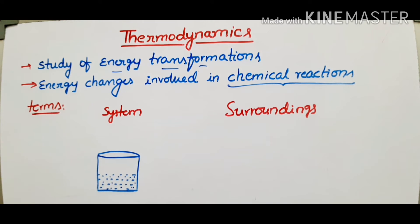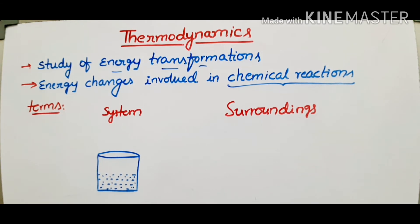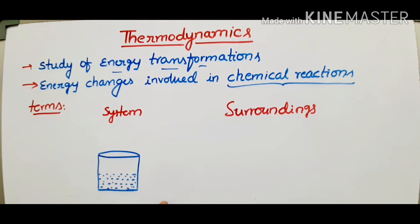Now we have to know some thermodynamic terms. First, we have to understand 'system', and next 'surroundings'. The part in which the observations are made is called the system. For example, in a beaker, we have a mixture of A and B. The chemical reaction involved with the material inside the beaker is the system.